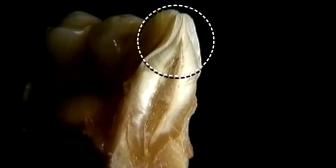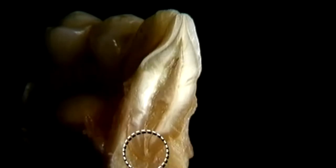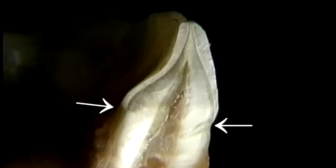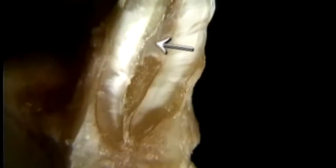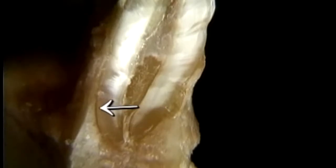Here's the crown of the tooth, the root, and the apex. Here's the neck. Here's the pulp cavity. Here's the apical canal and the periodontal membrane.